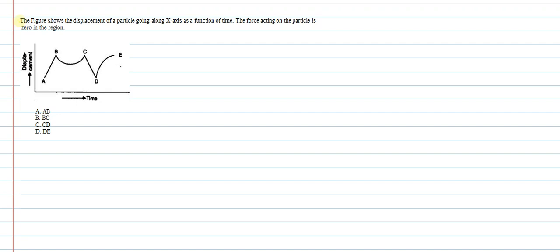Hello students, let's understand this question. The figure shows the displacement of a particle going along the x-axis as a function of time. The force acting on the particle is zero in which of the given regions? We have been given a graph, and there are certain regions AB, BC, CD, and DE which are our options. We have to find in which region the acceleration is zero.